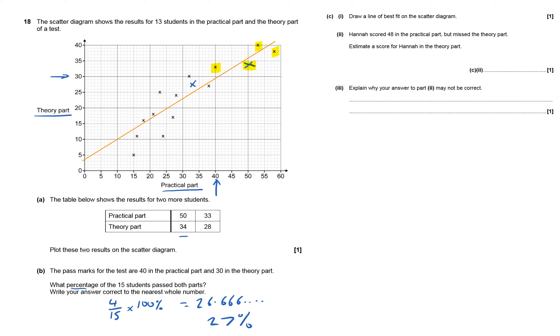Hannah scored 48 in the practical but missed, so 48 in practical, so that means I need to go up the 48 from the practical and then go across. And according to mine, it's 35.